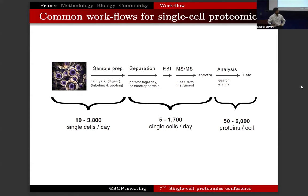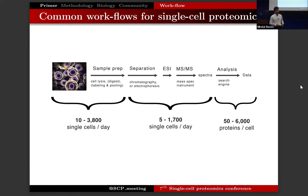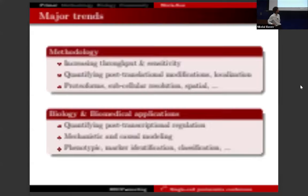We can now analyze over 1,000 single cells in a single day by mass spectrometry to quantify their proteomes. The depth of coverage varies very significantly depending on the size of the cell — we quantify fewer proteins from a tiny T cell compared to a HeLa cell compared to an oocyte. This depends tremendously on the technology used, the instruments, and the data acquisition approaches. Some of the new instruments have really facilitated increasing the depth of coverage.